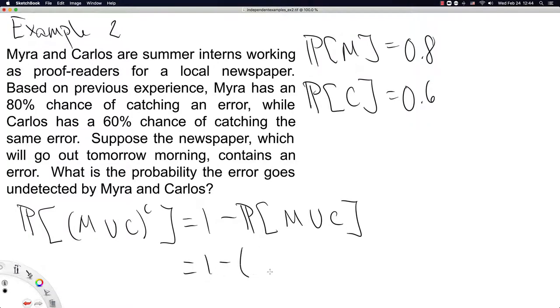We've got 1 minus, now let's pay attention to parentheses here, the probability that Myra catches the error, plus the probability that Carlos catches the error, minus the probability of Myra and Carlos both catching the error simultaneously. Oh, well we don't have this one. But you know what?